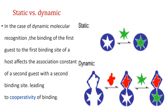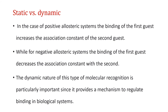In dynamic molecular recognition, the binding of the first guest to the first binding site of a host affects the association constant of a second guest with a second binding site, leading to cooperativity of binding. In the case of positive allosteric systems, the binding of the first guest increases the association constant of the second guest, while for negative allosteric systems, the binding of the first guest decreases the association constant with the second.